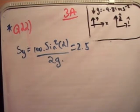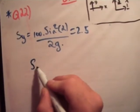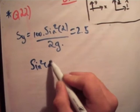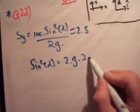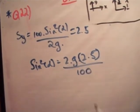So this is pretty straightforward. What we do is we say sine squared of alpha is equal to 2 times g times 2.5 over 100.